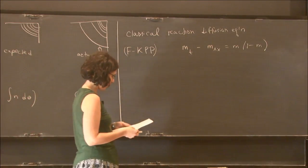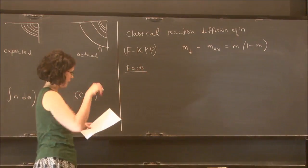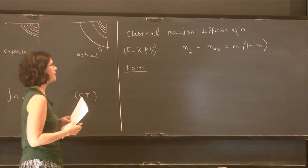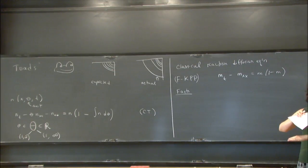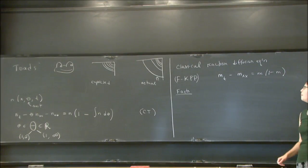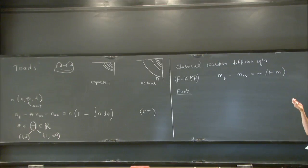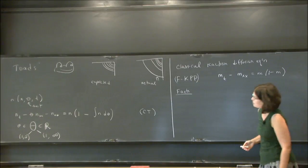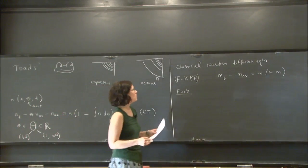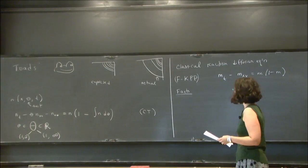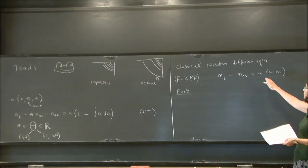Fact zero: this equation enjoys the comparison principle. That means if you start with two different initial data that are ordered, the solutions stay ordered for all time. It also has the maximum principle, which gives bounds. How do you prove something like this? At a maximum, a function's derivative is zero and second derivative is non-positive. But if you try to make such an argument with an equation with a non-local term, you can't — that's why Fisher-KPP enjoys comparison and maximum principles, and the Kane-Toads equation does not. If you start with u between zero and one, it stays between zero and one, because zero and one are steady solutions.